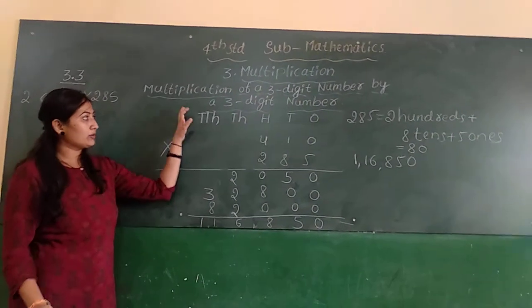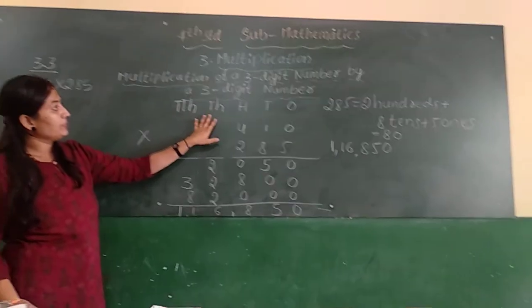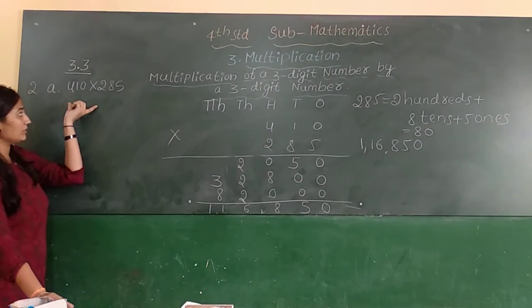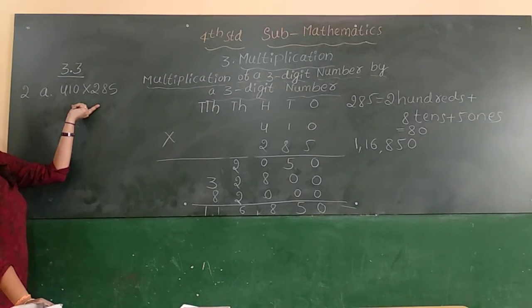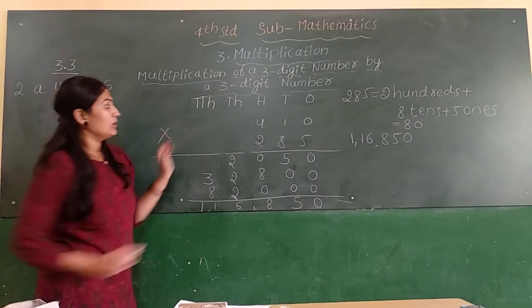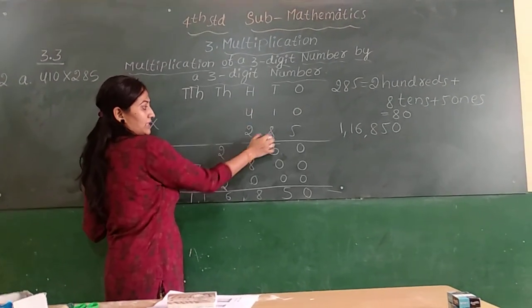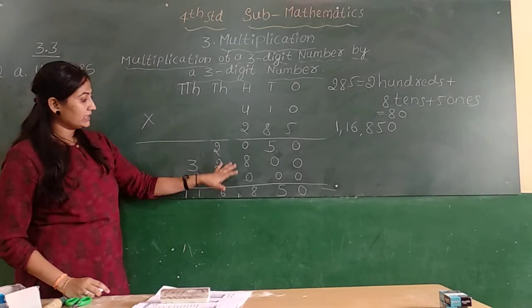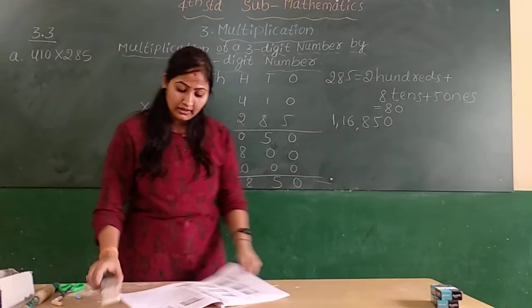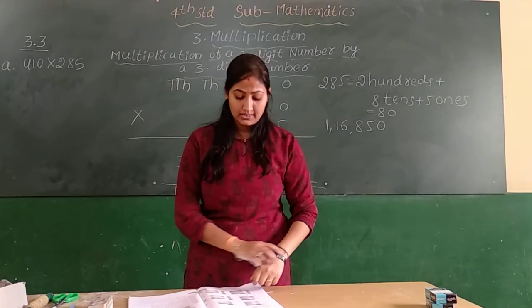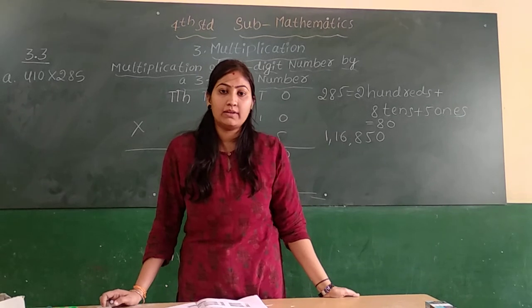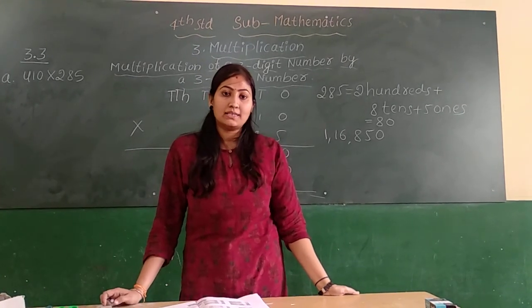Like this we have to multiply 3-digit numbers by 3-digit numbers. First we have to arrange the numbers according to their place value, column-wise arrangement, then do the multiplication. I have solved exercise 3.3. You have to do the remaining problems at your home and submit to us. Thank you.